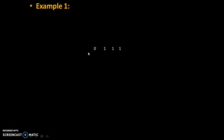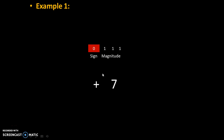Let's take an example. Suppose the number given is 0 1 1 1. Here, 0 indicates the sign and the three digits 1 1 1 indicate the magnitude. 1 1 1 is 7, and 0 means plus, so 0 1 1 1 is actually plus 7 in decimal.